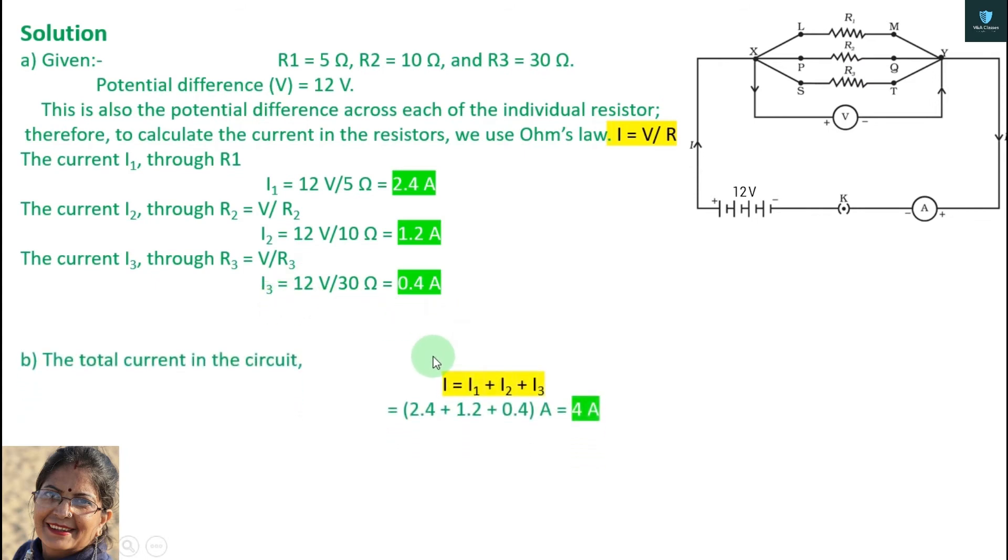Now the part B comes. Now it is asked about the total current. So how much is the current? The same voltage is here. After this point we will have to add I1, I2 and I3. After this point, we will do the same voltage value.